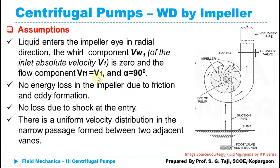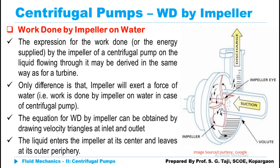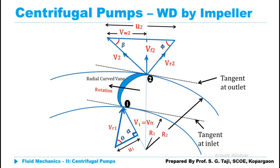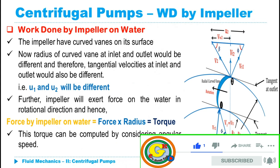Previously we discussed the assumptions made in the theory and derivation of work done by the impeller on the water, the working of the centrifugal pump, and the concept of angular momentum. We also covered velocity triangles at the inlet and at the outlet. You can pause this video to review those points on the slide.